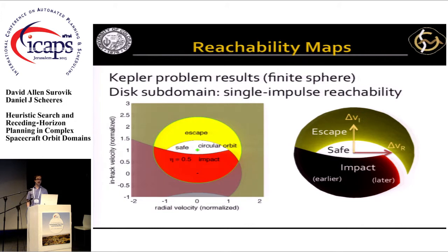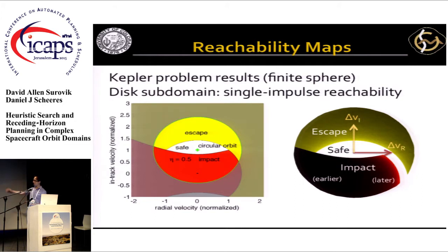If you speed up too much in the in-track direction, you reach the escape region. If you slow down too much, you'll fall into the center of the body. If you speed up straight towards the body, you crash into it. The red region shows the set of velocities that result in impact, while the gold region shows those that result in escape. On the right, I'm plotting the same thing obtained numerically, color-coded based on how soon the failure event happens.